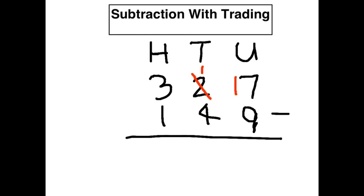Now we can take the 9 away. 9 is now smaller than the 17 that we have here. 17 take away 9, do that one in your head, and you should get 8.